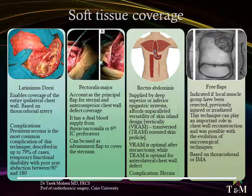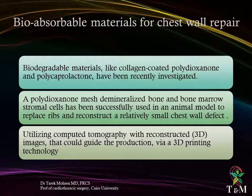Free muscle flaps may be indicated if local muscle groups have been resected, previously injured, or irradiated. This technique can play an important role in chest wall reconstruction and became possible with the evolution of microsurgical techniques. Options include latissimus dorsi, parascapular fascio-cutaneous or myocutaneous flaps from the back, and tensor fascia lata and transverse free flaps from the thigh.